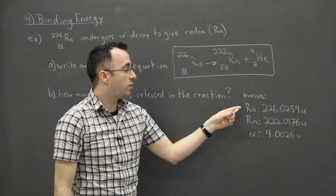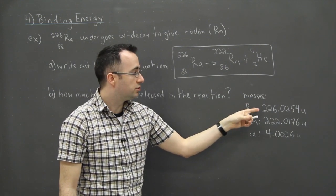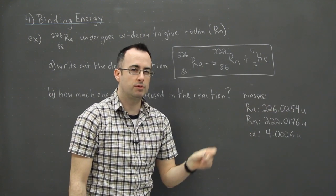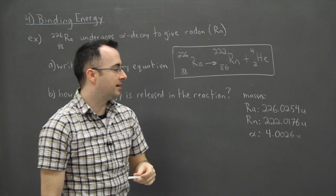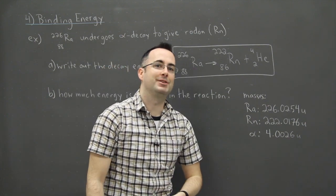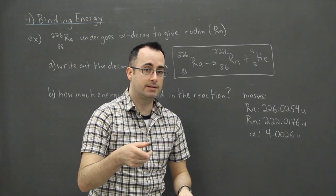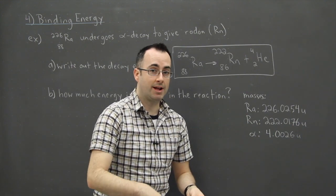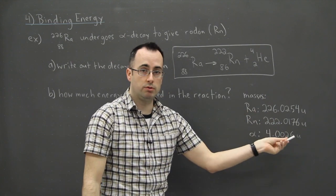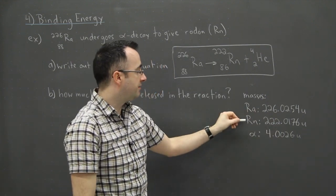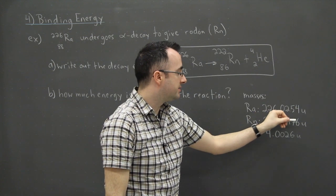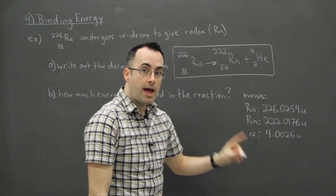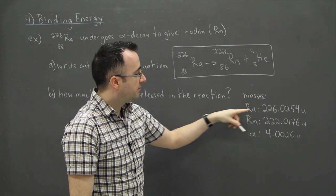We've been given the masses, so we're told that the mass of one radium atom is 226.0254U. Remember those U's. You could always use them to convert to the mass in kilograms if you felt like it, but I don't recommend doing that. There's a reason why we use these weird units. Okay, so then we have radon is 222.0176, and we have alpha particles 4.0026.